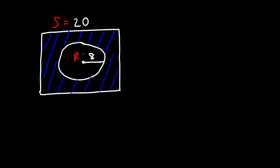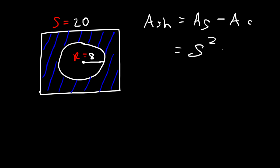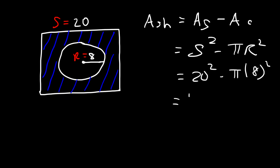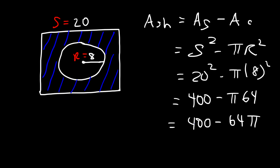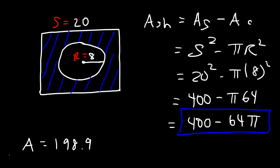The area of the shaded region is the area of the larger object — the square — minus the area of the smaller object — the circle. The area of the square is s squared and the area of the circle is pi r squared. So this is 20 squared minus pi times 8 squared: 400 minus 64 pi. As a decimal, that comes out to approximately 198.9 square units.